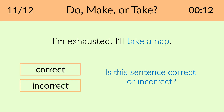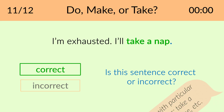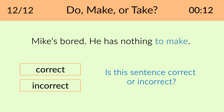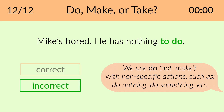This sentence is correct: I'm exhausted, I'll take a nap. We use take with particular nouns. The correct answer is: Mike's bored, he has nothing to do. We use do, not make, with non-specific actions.